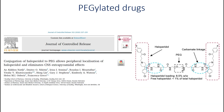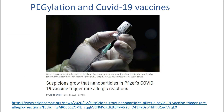PEGylation of small drug molecules could also sometimes lead to beneficial effects. For example, in our recent study it was demonstrated that PEGylation of haloperidol could prevent its penetration into the brain, which leads to very useful therapeutic effects in some other organs and helps to avoid unwanted side effects.